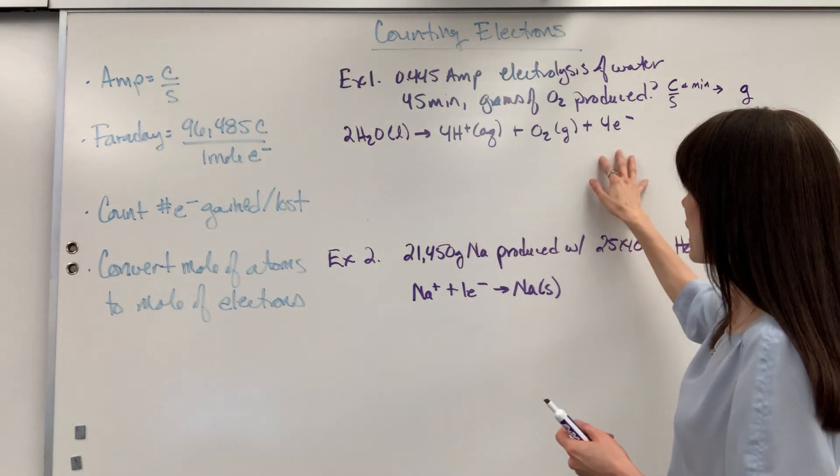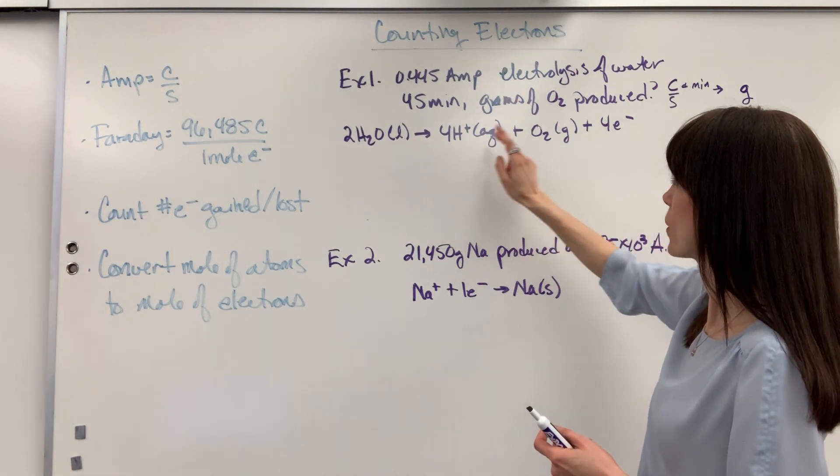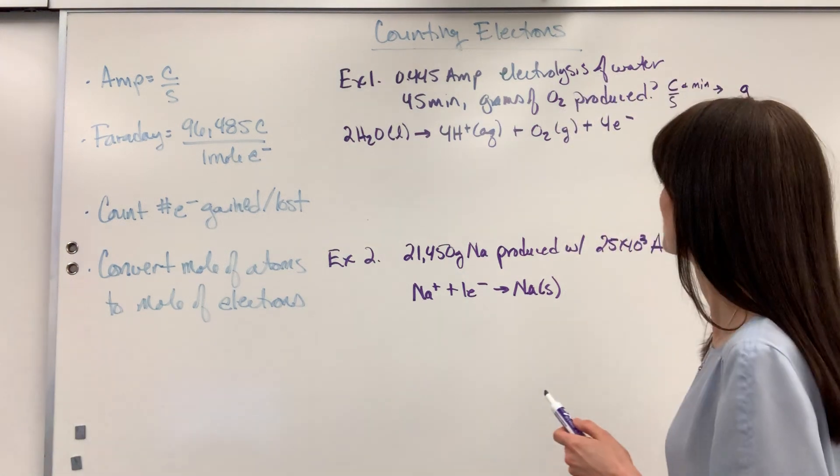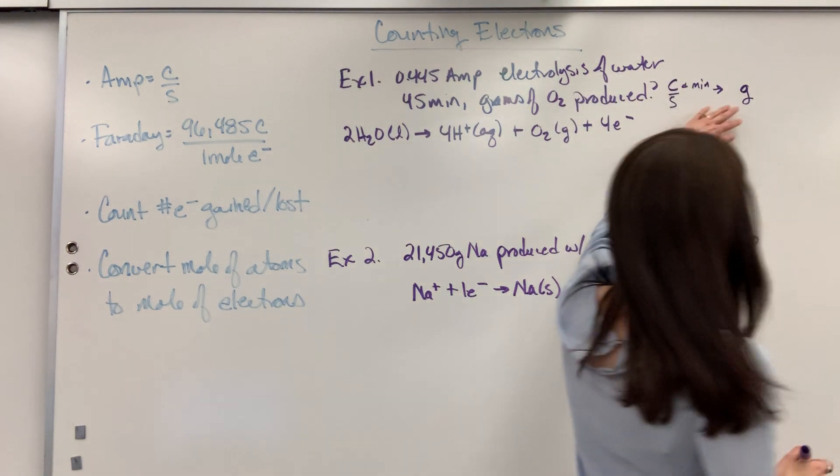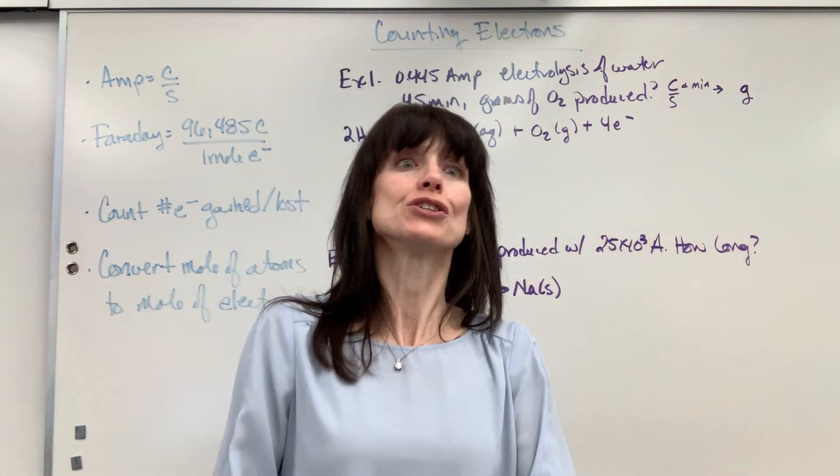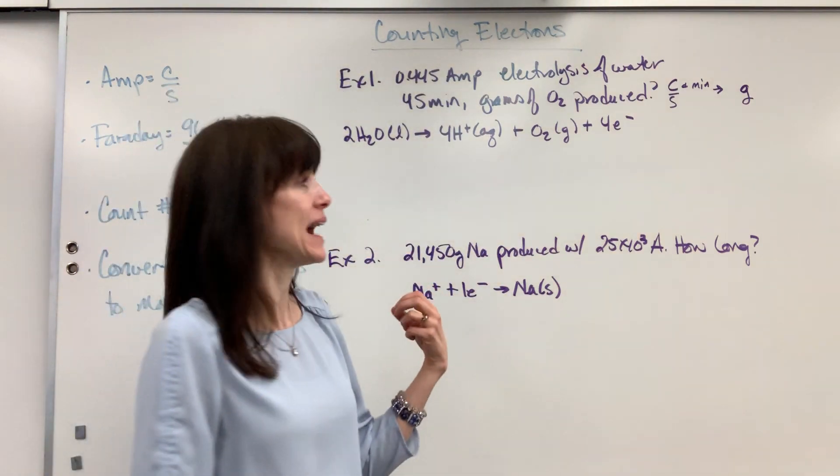So, I wrote down our half reaction. Here's oxygen being produced, hydrolysis of water, water being broken into hydrogen and oxygen. Notice is four electrons transferred. Four electrons are going to be transferred on this. Now, I wrote over here a little note. This is always where I begin. I look at units. Units will tell you what to do. So, I write down what I want, what I have.